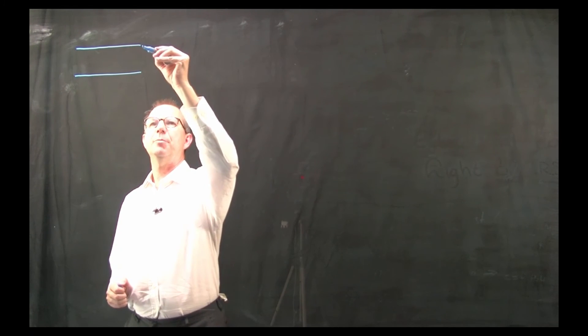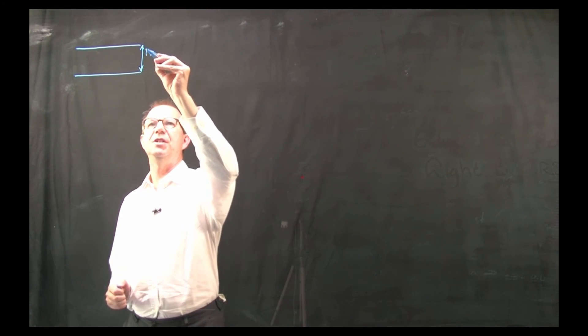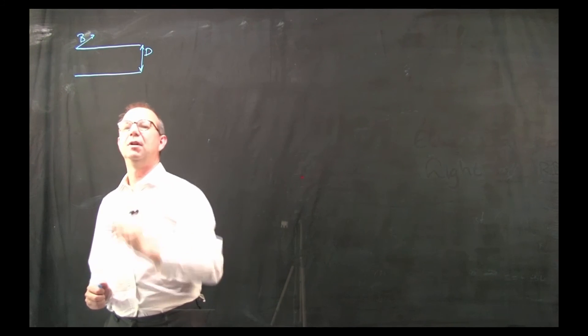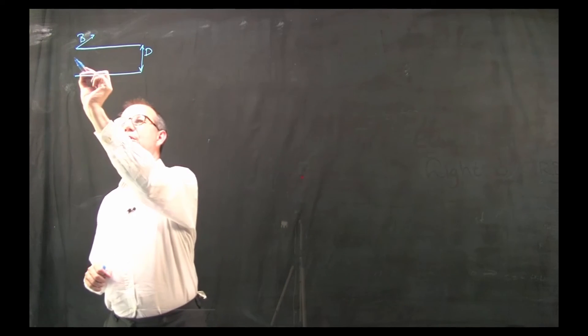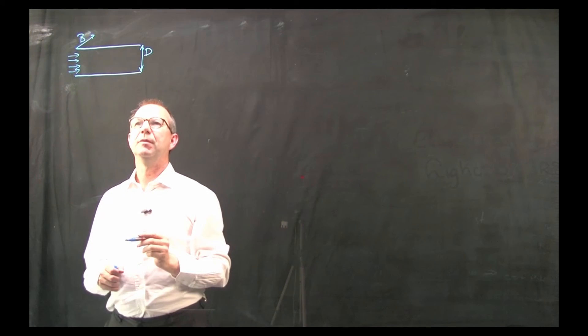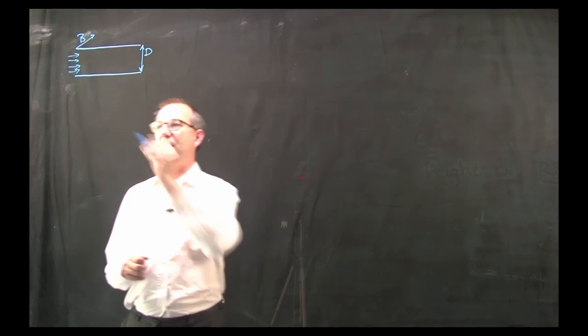These plates are separated by a distance d and their size in the other direction, b, is very big. Flow is coming in, flowing in that direction.